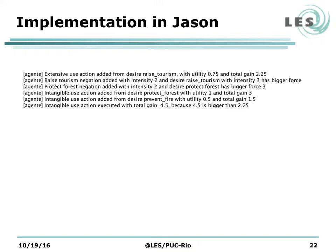The gain of the action extensive use is intensity 3 times utility 0.75, resulting in 2.25. The raise tourism negation has intensity 2, but the desire to raise tourism has intensity 3. Assuming intensity equals force, the desire to raise tourism wins the argument and remains in the knowledge base. The same thing happens with the desire to protect forest. The intangible use action is related to the desires to protect forest and prevent fire. Assuming the total gain is the sum of gains of each action, the desire to protect forest has utility 1 and intensity 3 giving gain 3, and prevent fire has utility 0.5 and intensity 3 giving gain 1.5, so the total gain of intangible use is 4.5, which is bigger than 2.25. Therefore, the intangible use action is selected by the park manager.